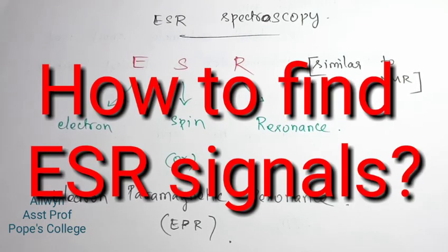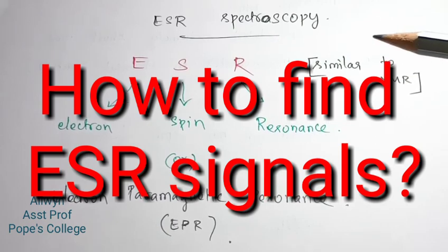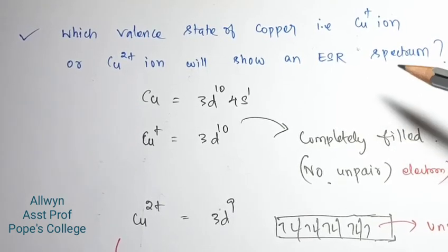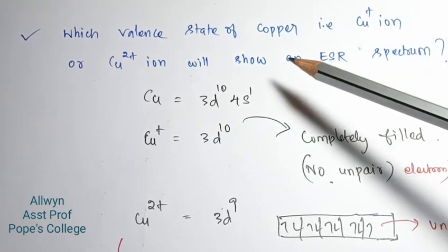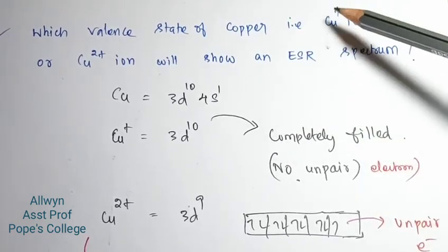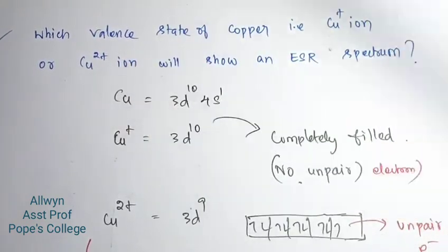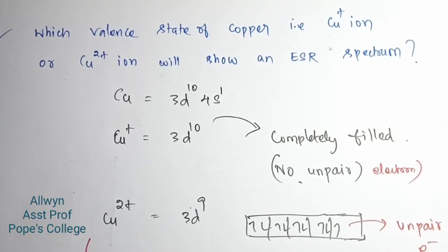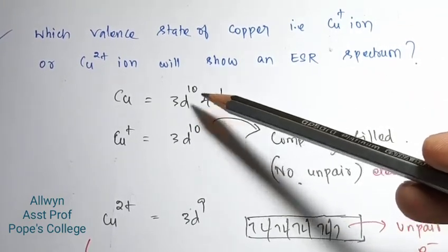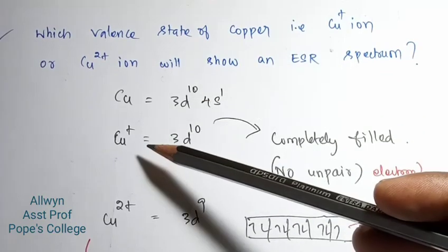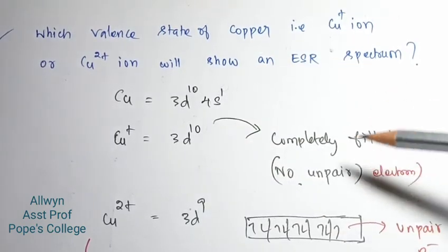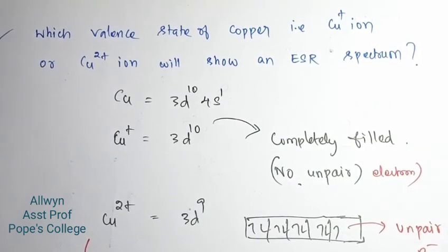Welcome to this video. We will talk about ESR spectroscopy — which valence state of copper, that is Cu+ ion or Cu2+ ion, will show ESR spectroscopy.